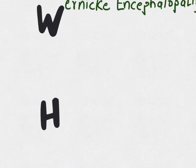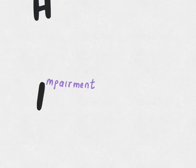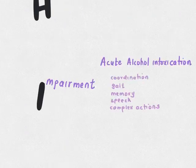H is for hypoglycemia. Alcohol gives empty calories and so there is no intake of food along with it, causing hypoglycemia. I is for impairment — all the acute alcohol effects: incoordination, gait imbalance, impairment in memory, and dysarthria, making it difficult to perform complex actions.